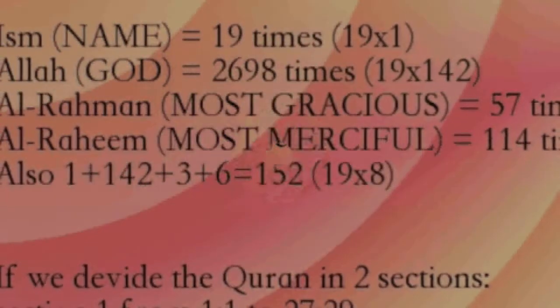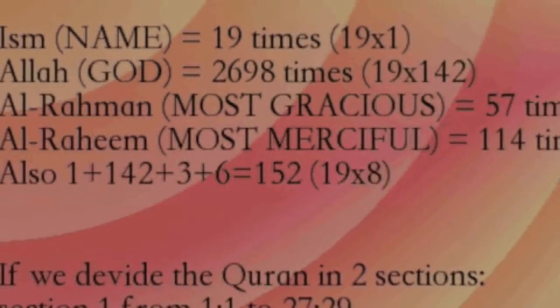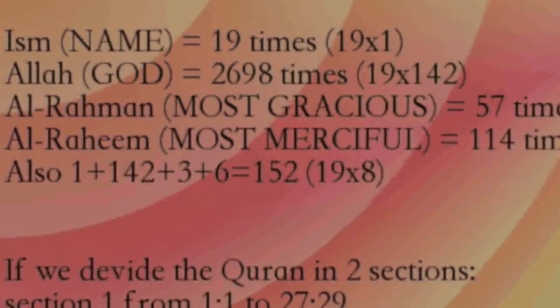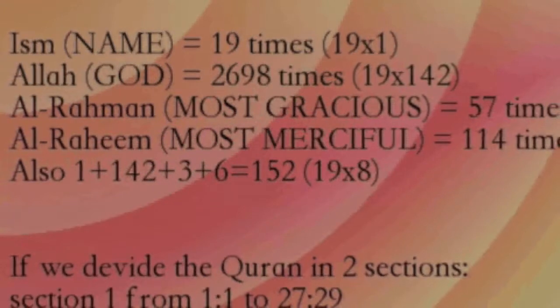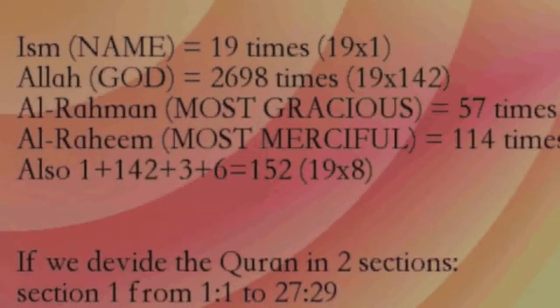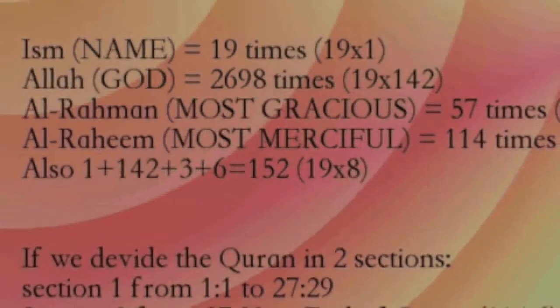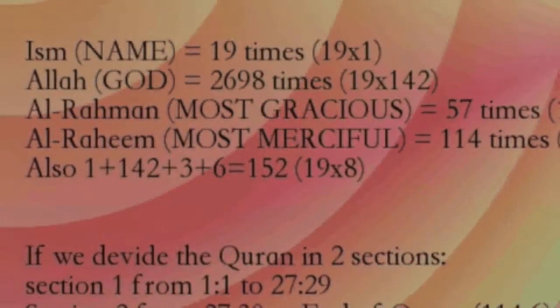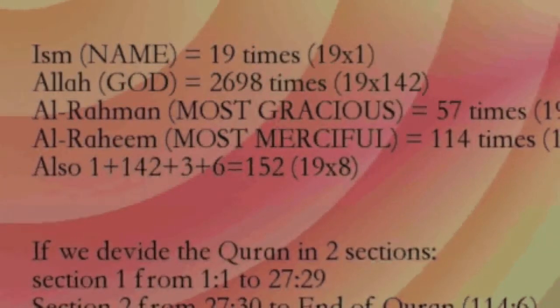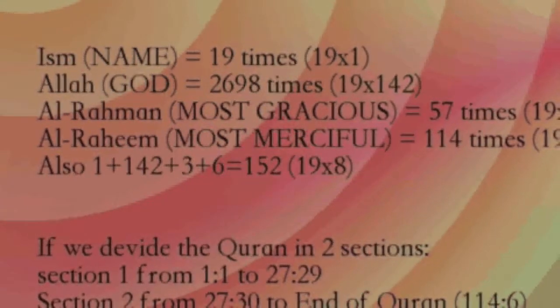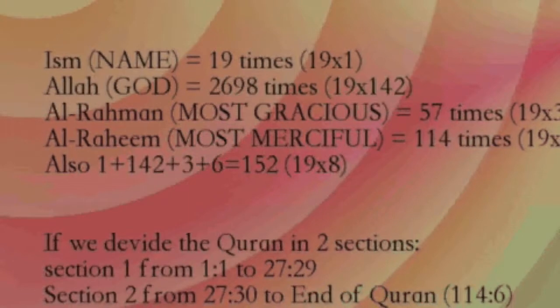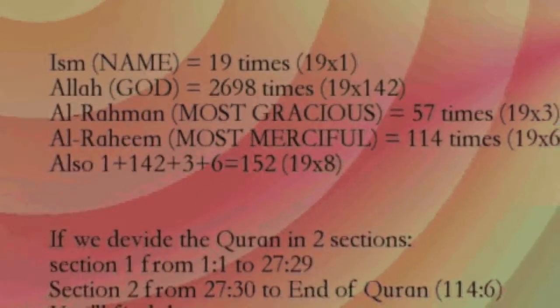19. Each frequency of occurrence connected with the opening statement, i.e., 19, 2,698, 57, and 114 corresponds to the numerical value of God's names. 20. All compiled lists of the known names of God, more than 400, were found to include only 4 names with numerical values divisible by 19. These 4 names are the same 4, which correspond to the frequencies of occurrence mentioned in 19 above.